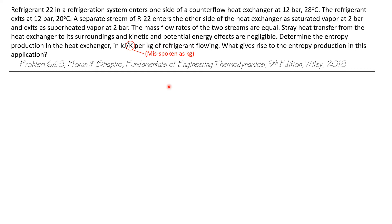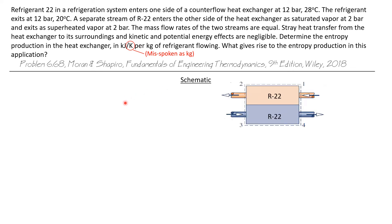What gives rise to the entropy production in this application? Let's start with a schematic of this system. We have a heat exchanger and R22 is flowing through both sides, and we're going to take the system as the entire heat exchanger, drawing the system boundary around both of the R22 flow rates.